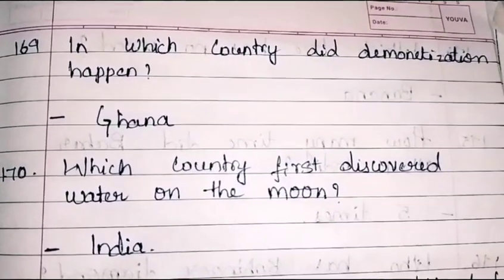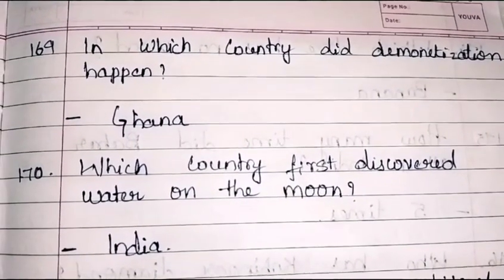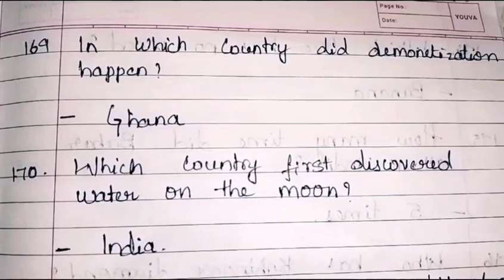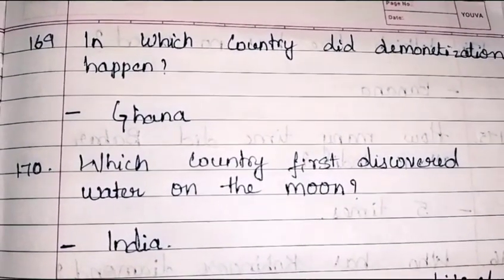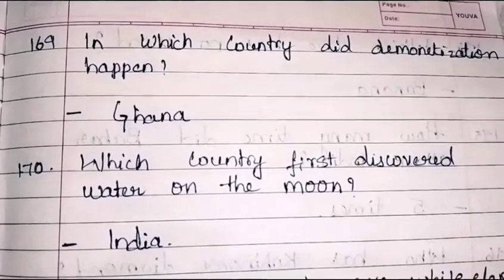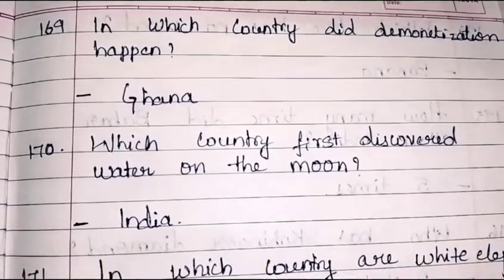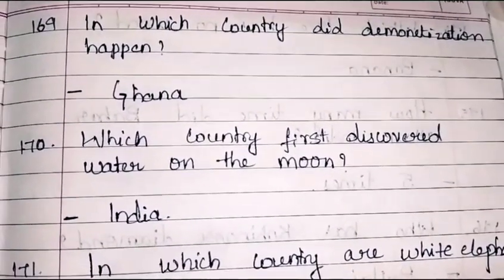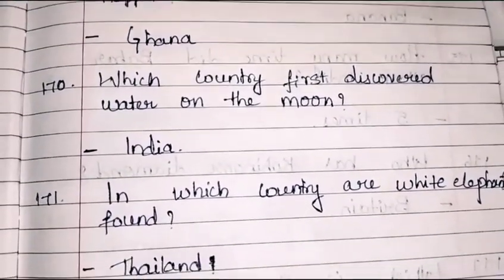In which country did demonetization happen for the first time? It is Ghana. Demonetization happened in Ghana for the first time.